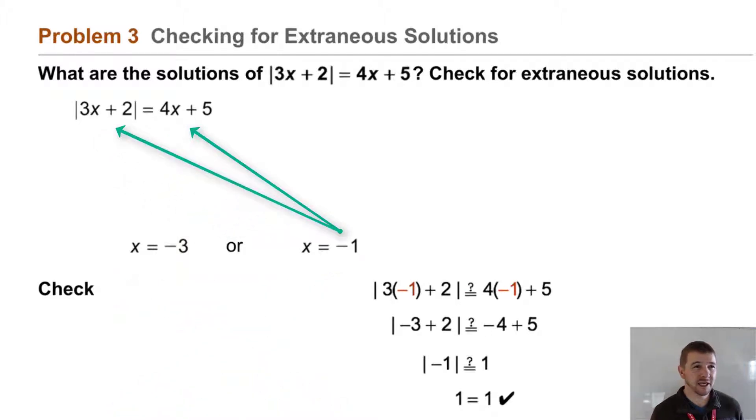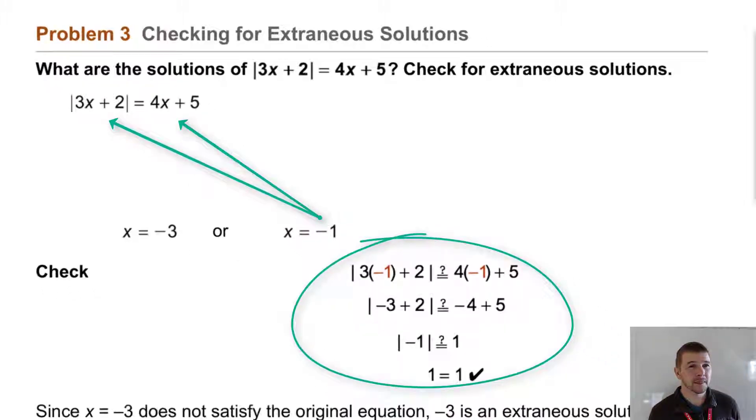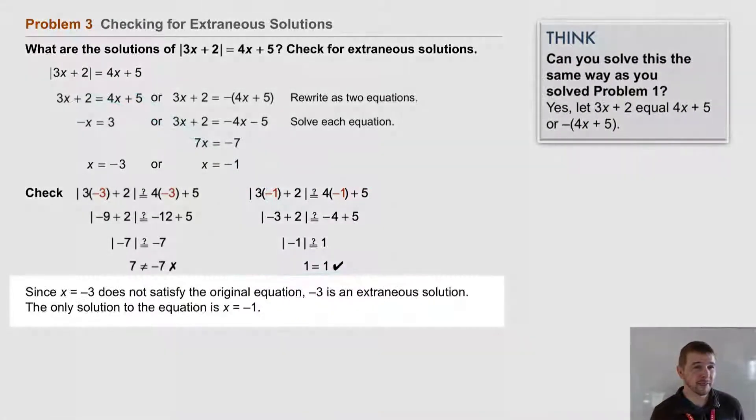Then on the right hand side, if we check negative 1, it works out and simplifies positive 1 equals positive 1 and that is true. So we can state in our final answer, since x equals negative 3 does not satisfy the original equation, negative 3 is an extraneous solution. The only solution to the equation is x equals negative 1.